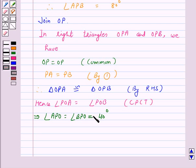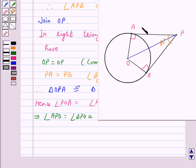Now in triangle POA, angle OAP is 90 degrees and angle APO is 40 degrees. So we have angle POA is equal to 180 degrees minus 90 plus 40 degrees and this is equal to 180 degrees minus 130 degrees which is equal to 50 degrees.